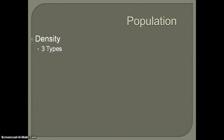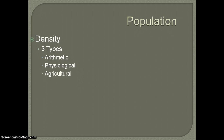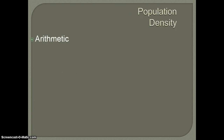The density of an area is going to be important because it lets us know really how many people are fitting into an area and what struggles that particular area may or may not be undergoing, and it might lead us a little bit to a conversation on development. The three types of density we're talking about today are arithmetic density, also known as population density, physiological density, and agricultural density.